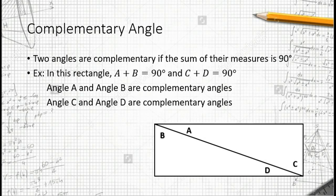For example, in this case, we have a rectangle and it is bisected by a diagonal line. Angle A, B, C, D are formed.